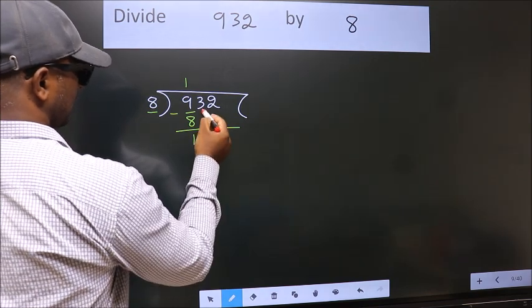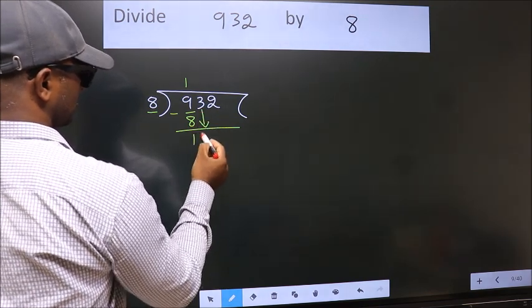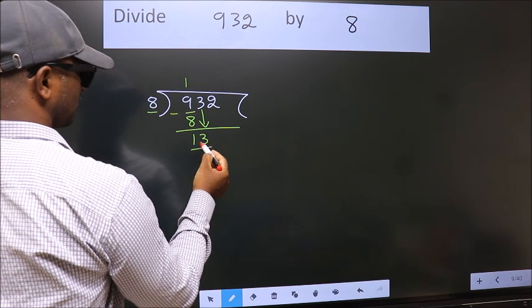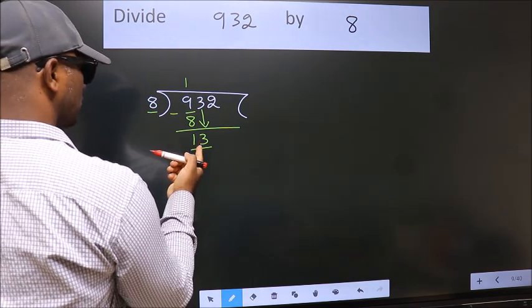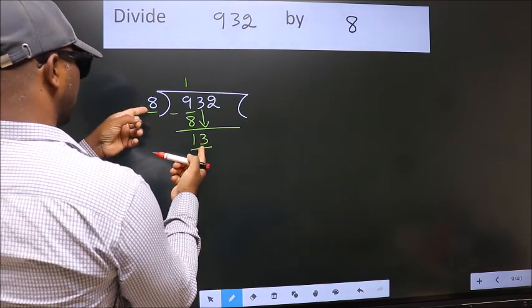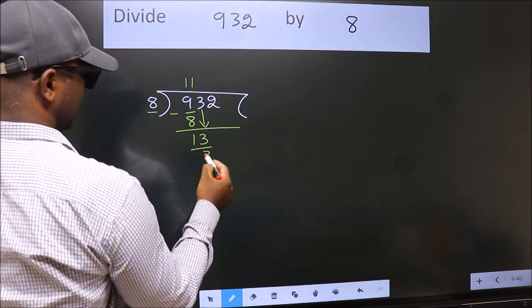After this, bring down the beside number. So 3 down. So 13. A number close to 13 in 8 table is 8 once 8.